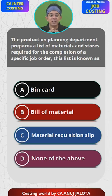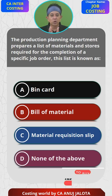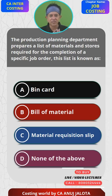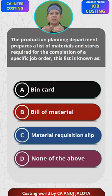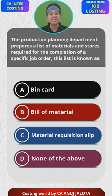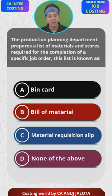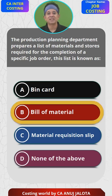Based on the bill of material, the factory requests the stores department to issue the required material. That request is in the form of a material requisition slip, which is given to the stores department and they issue the material. So the question asks what list the production department prepares of required materials — that list is the bill of material. Therefore, the correct answer is B.